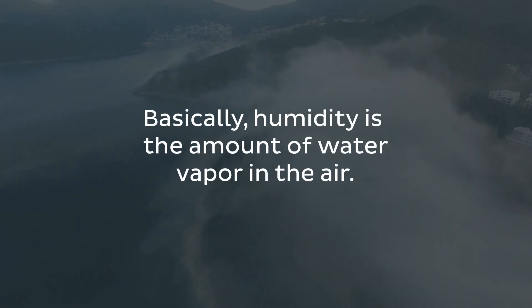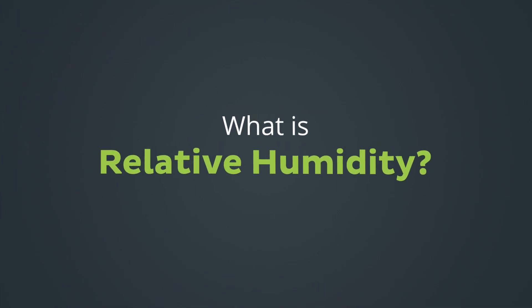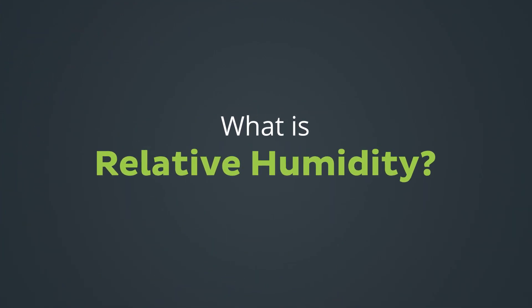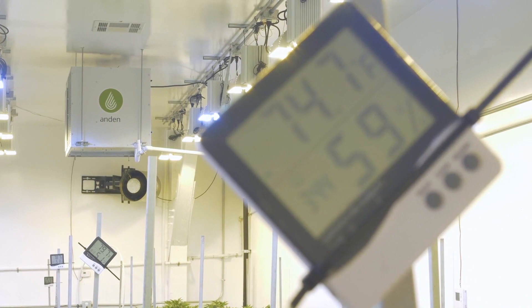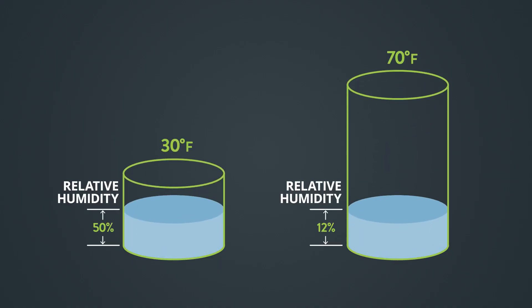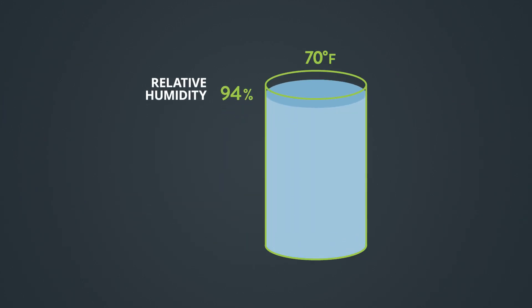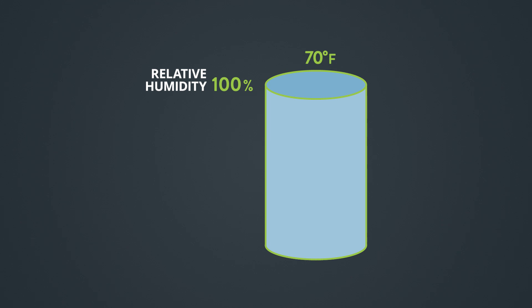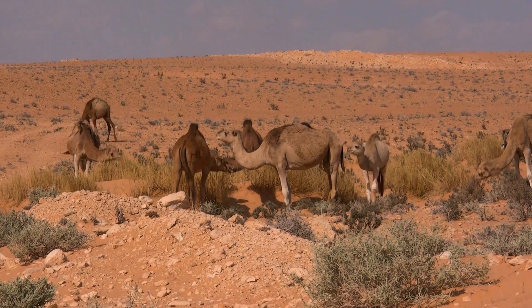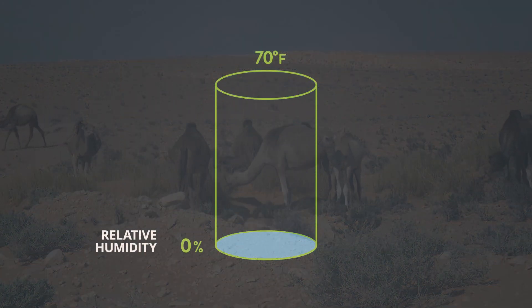Basically, humidity is the amount of water vapor in the air. So what is relative humidity? Relative humidity is expressed as a percentage, telling you how full of moisture the air is at a given temperature. When there is no energy left for continued evaporation, the air moisture is completely saturated with a relative humidity of 100%. When the air is very dry with no water vapor, the relative humidity is close to zero percent.